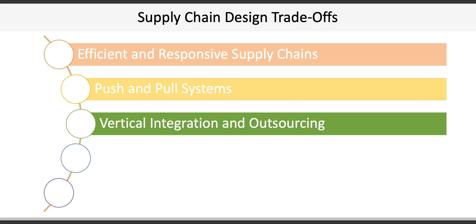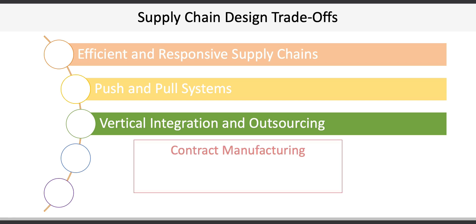Outsourcing is the process of having suppliers provide goods and services that were previously provided internally. Companies outsourcing payroll services to ADP is a prime example. Other applications include contract manufacturing, where a firm specializing in certain types of goods-producing activities — such as customized design, manufacturing, assembly, or packaging — works under contract for end users. Microsoft, for example, uses Foxconn as a contract manufacturer to make Xboxes.